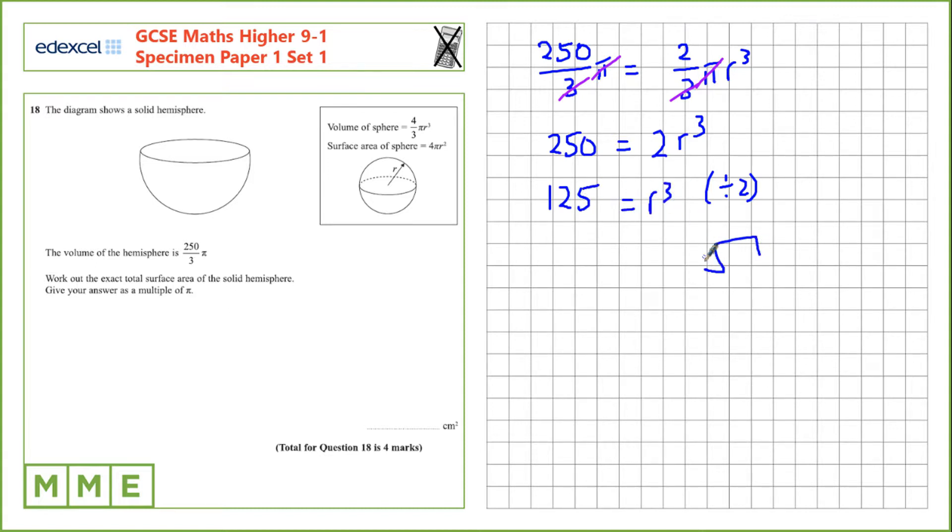And then we've got to take the cube root to find r. On the right hand side we have r, and the cube root of 125 is 5. So we know the radius is 5.